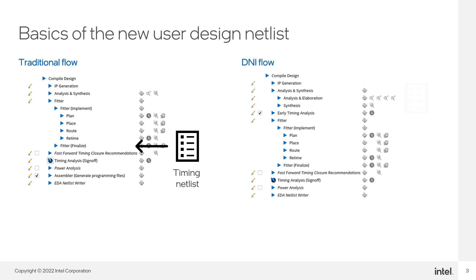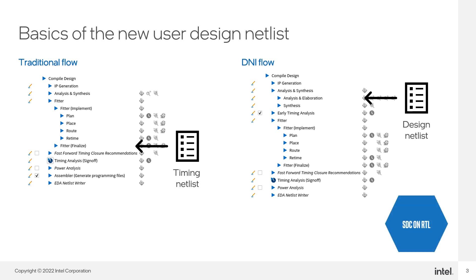The design netlist infrastructure flow, known as DNI, serves as a platform to access the user design netlist during the elaboration stage via the new SDC on RTL feature, which is available for Quartus Prime Pro 22.3 and later.